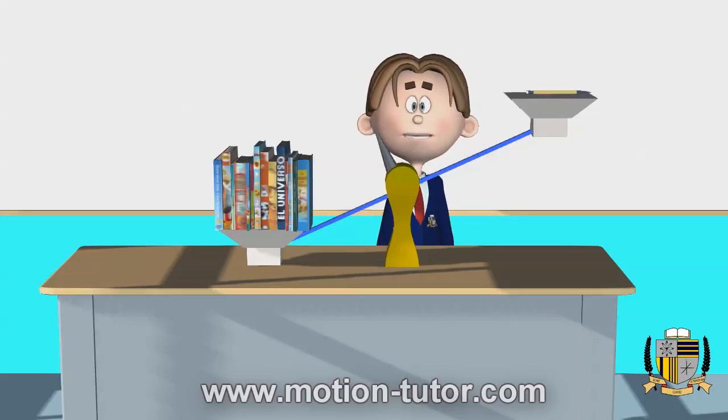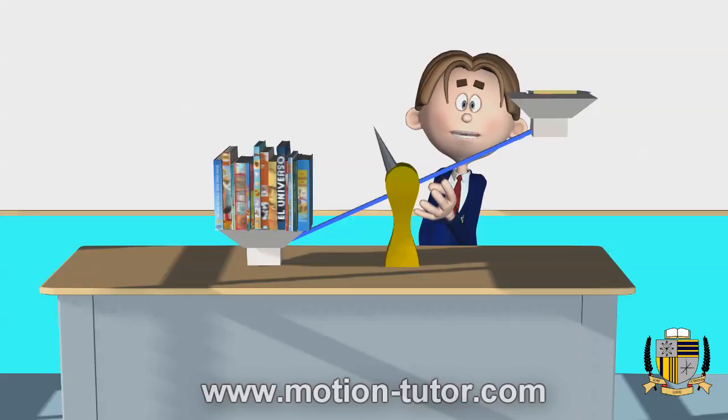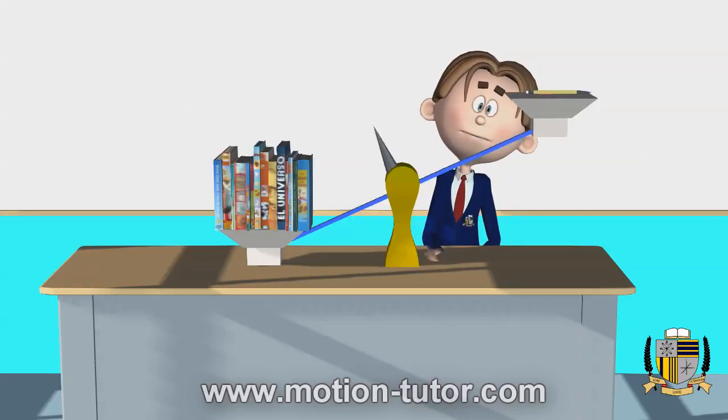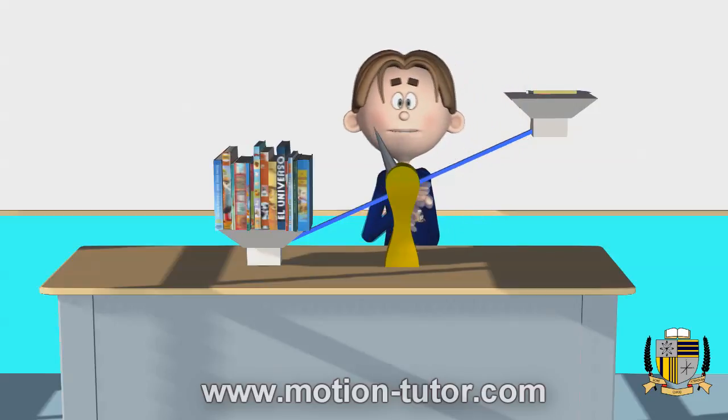So the way this scale is tilted this way tells us that the books are the heavier objects. So the books are heavier than the pencil, and in other words, the pencil is lighter than the books.